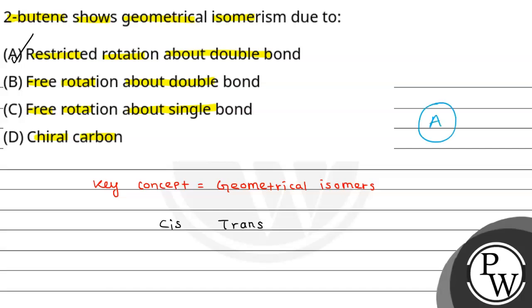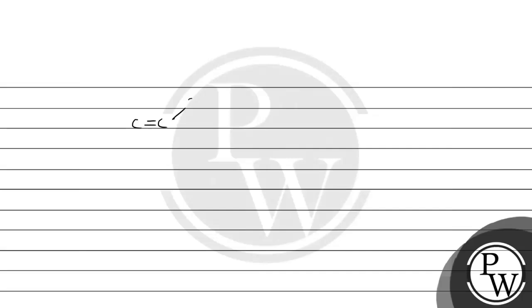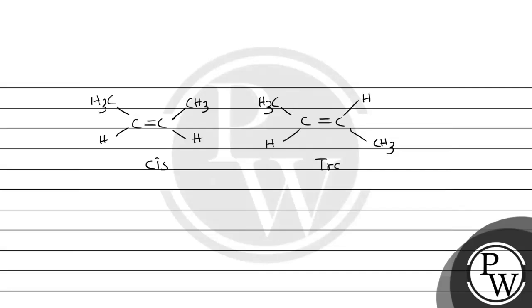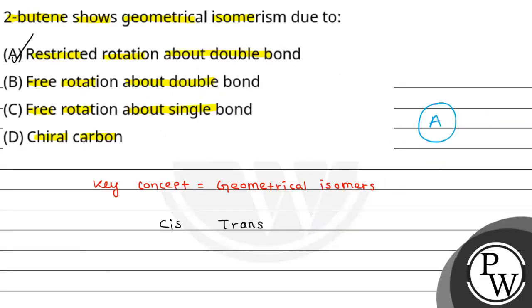So the answer is option A: restricted rotation about the double bond is why geometrical isomerism is shown in 2-butyne. 2-butyne is CH3–C double bond C–CH3, where R is actually a methyl group. This gives us cis-2-butyne with CH3 and H on same side, and trans-2-butyne with CH3 and H on opposite sides. So option A is the answer. Hope you understood it well. Thank you so much.